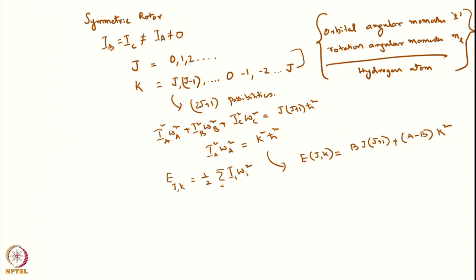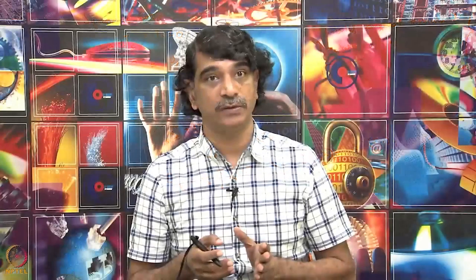The energy depends on the absolute value of K, so plus K or minus K give the same energy. This is similar to ML values: just as ML does not change the energy in polyelectron atoms — only L changes the energy — similarly here the sign of K does not change the energy.